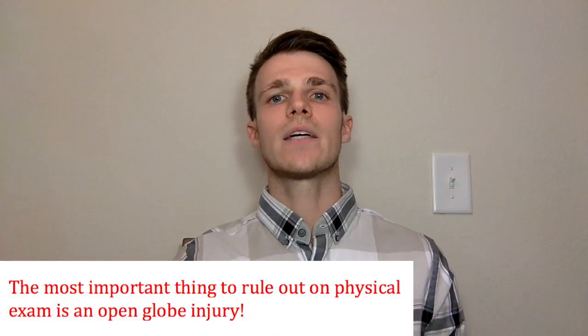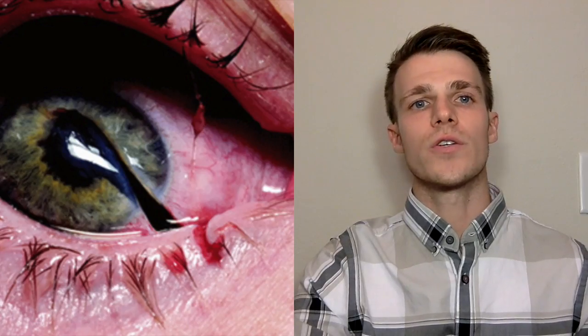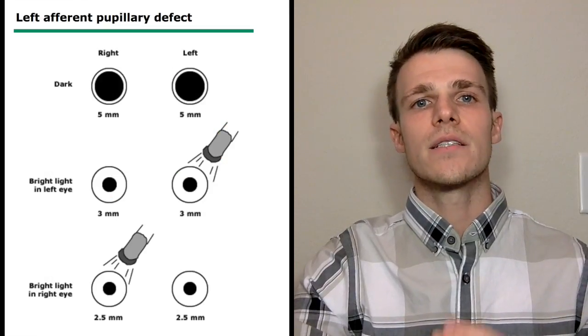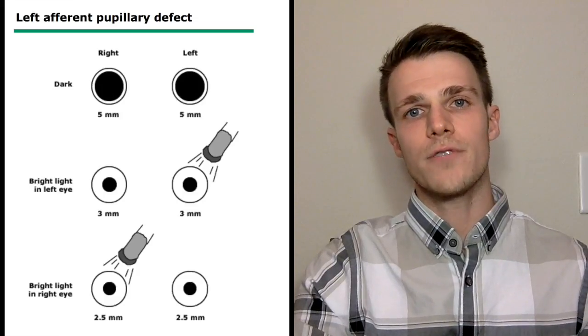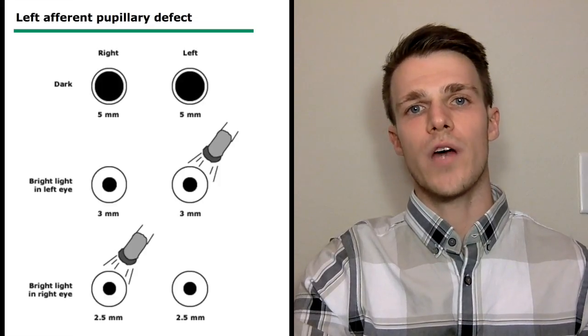On physical exam, the most important thing you need to rule out is an open globe injury, especially if they're complaining of pain secondary to trauma. On general inspection, make sure there are no protruding obvious foreign bodies. Then have the patient open their eye — if they cannot do this on their own, gently pull the lids apart, making sure not to apply pressure to the eye. Using a pen light, make sure there's no eccentric or teardrop pupil, and no external prolapse of the uvea, which can be the iris, ciliary body, or choroid. Assess the pupillary response, making sure there's no relative afferent pupil deficit typical of an open globe injury, and confirm a normal round pupil response in both eyes. Assess the anterior chamber, which in the absence of an open globe injury should appear clear, deep, and of normal contour.